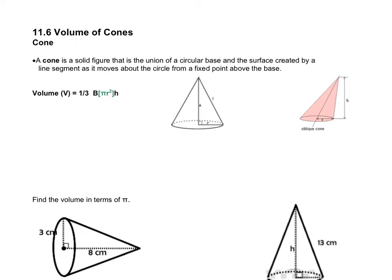A cone is a solid figure that is the union, which basically means the meeting, of a circular base and the surface created by a line segment as it moves about a circle from a fixed point above the base. So a cone is just like your little ice cream cone.